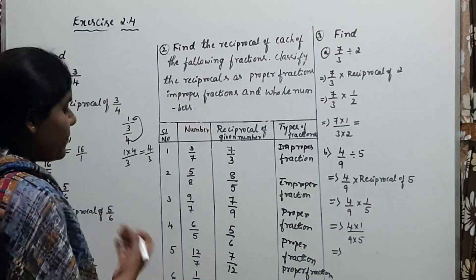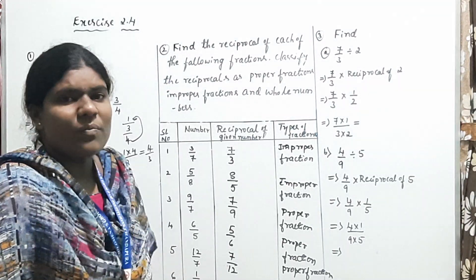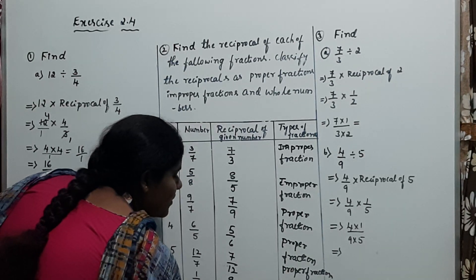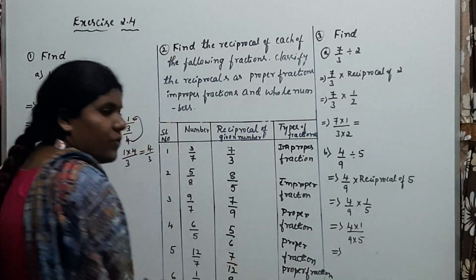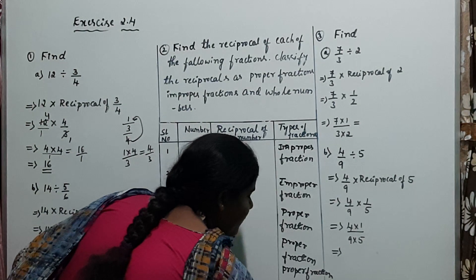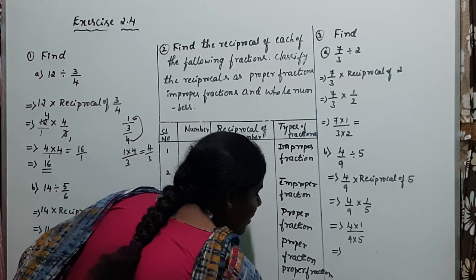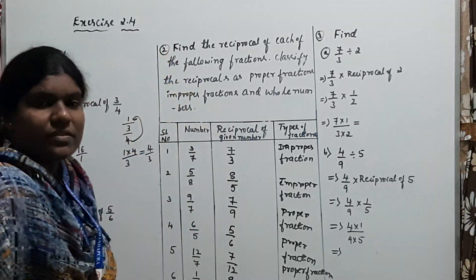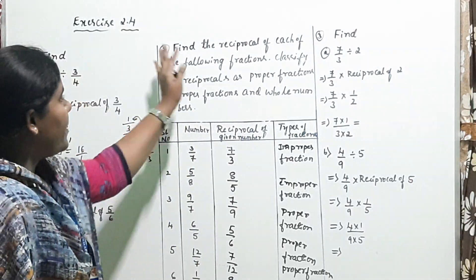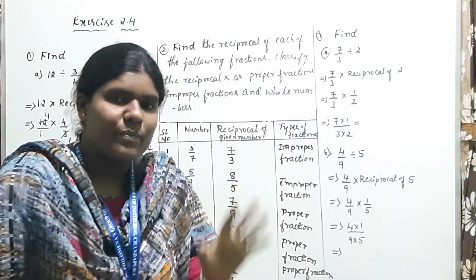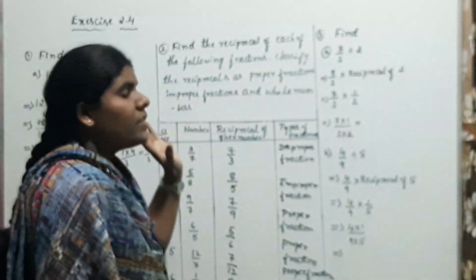The last problem: 1/8 is given. What is the reciprocal of 1/8? It is 8 divided by 1, which equals 8 only. This is a whole number. Therefore, this is a whole number. That completes the second question — you found the reciprocals and classified each as proper, improper, or a whole number.